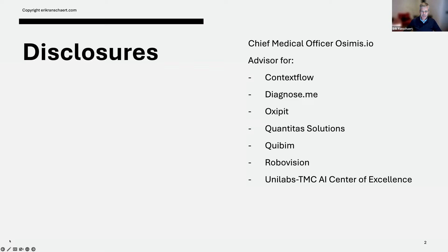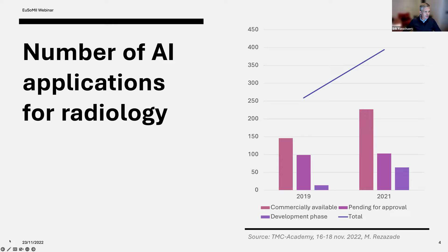As most of you probably know, the number of AI vendors and commercially available products is quite large already. Currently we have more than 200 CE-marked products in the European market, and the number of products is still increasing. In 2021, two-thirds of listed products were aimed at radiology, but this year that proportion has grown to 75%. Most of these applications have a narrow scope and task, which creates the risk of having to stack applications with unclear added value throughout the workflow.